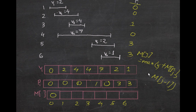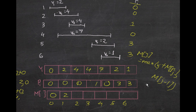For j=1: V1 is 2. So 2 plus M[P[1]], which is M[0] = 0. That gives 2 plus 0 = 2. And M[j-1] is M[0] = 0. The maximum of 2 and 0 is 2, so M[1] = 2. For j=2: V2 is 4. So 4 plus M[P[2]], P[2] is 0, so M[0] = 0. That gives 4. And M[j-1] is M[1] = 2. The maximum of 4 and 2 is 4, so M[2] = 4.